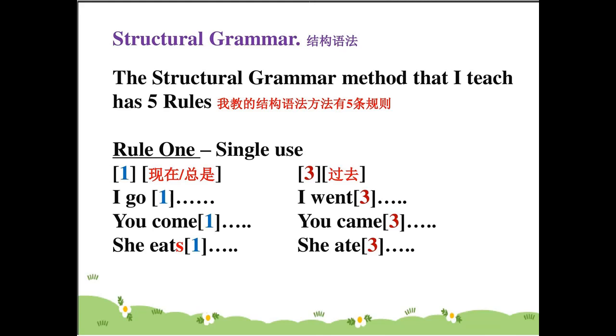Rule number one — single use. For example: I go, I went; you come, you came; she eats, she ate. You won't make mistakes writing this way.